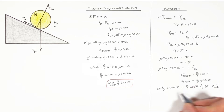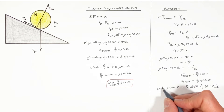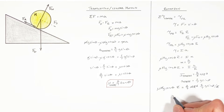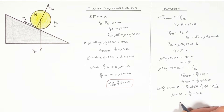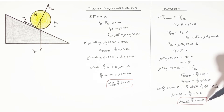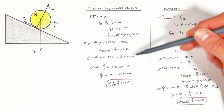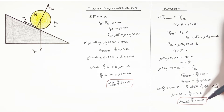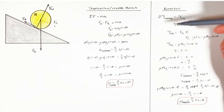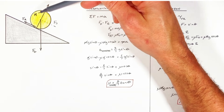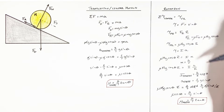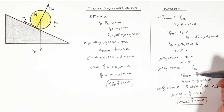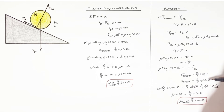Substituting these values into the equation, we notice that the radius and the mass both cancel out. Cleaning this up, we find the same result as when we looked at this problem through a linear or translational perspective: the required coefficient of friction is μ = 2/7 tanθ. If we were to change the shape of the rolling object to a disk or a hoop, we would need to change both the acceleration and the rotational moment of inertia to reflect the values for that particular shape.